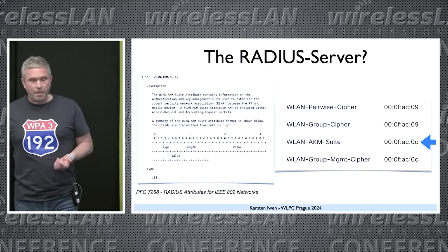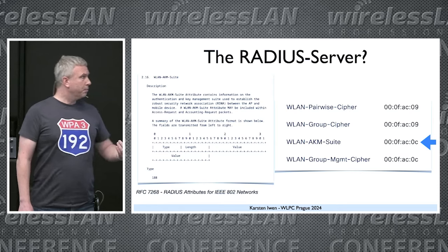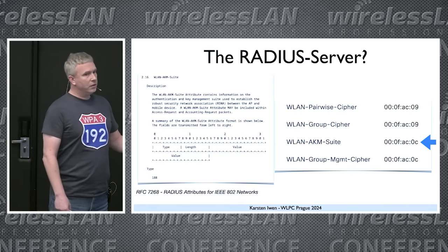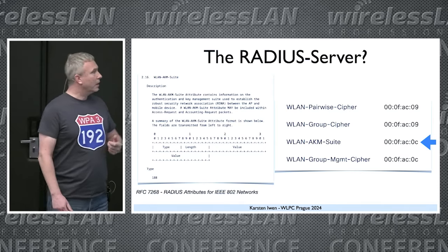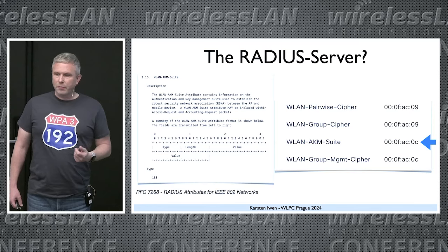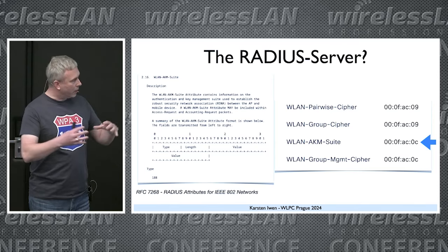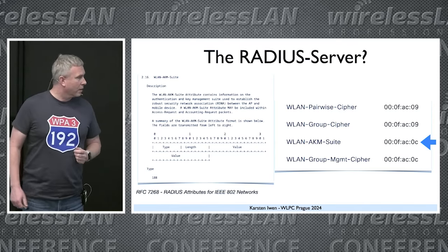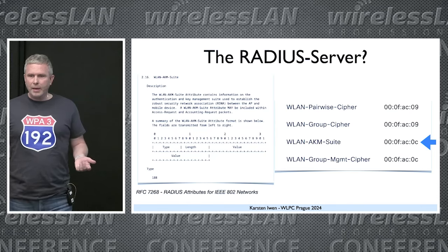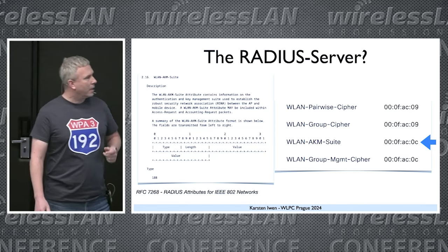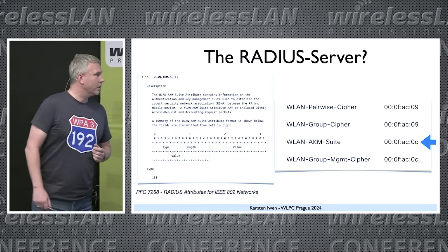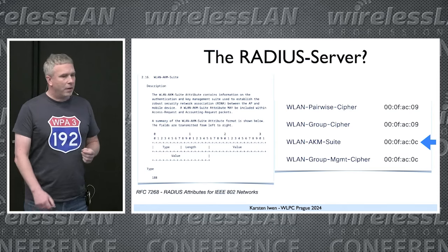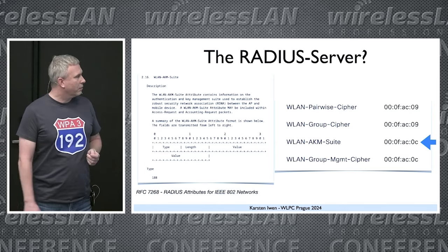What about the RADIUS server? It would certainly be a good idea if the RADIUS server knew that we are using 192-bit mode — for example, to restrict the allowed ciphers. We have a RADIUS attribute for that: attribute 188 sends the AKM suite to the RADIUS server together with some other interesting information.